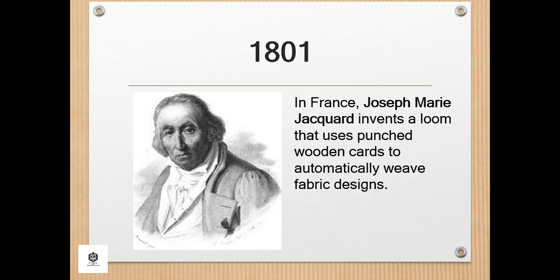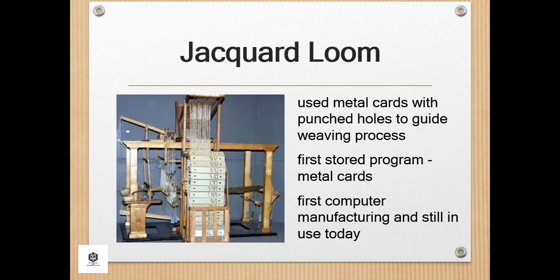In 1801, in France, Joseph-Marie Jacquard invented a loom that uses punched wooden cards to automatically weave fabric designs. Early computers would use similar punch cards. The Jacquard loom used metal cards with punch holes to guide the weaving process, representing one of the first stored programs, and the technology is still in use today.